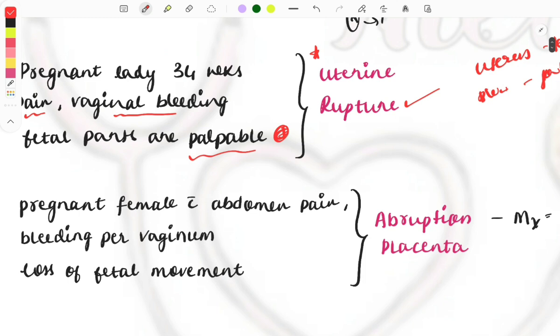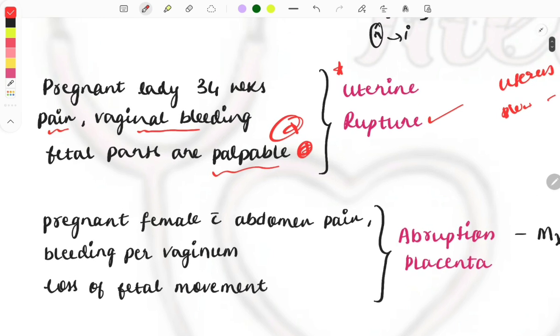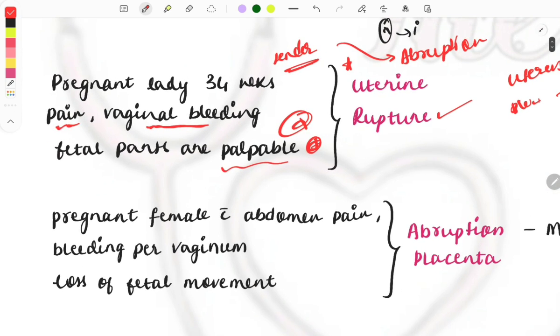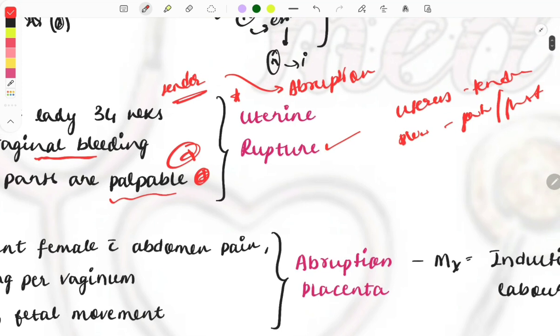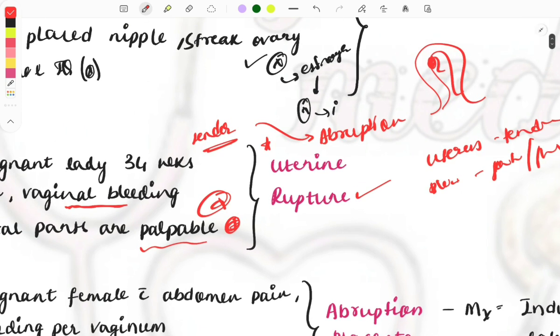Here they are describing that fetal parts are palpable, so this is uterine rupture, because when uterine rupture has occurred, you can easily palpate the fetal parts from the abdomen. But if this sentence is not given in the question and only pain, painful vaginal bleeding, and tender uterus are given, then it will be abruption.